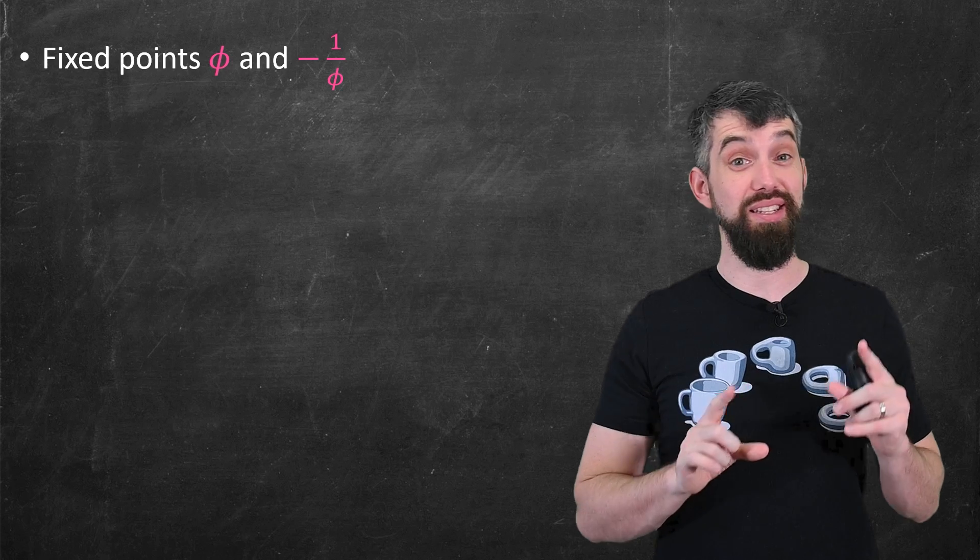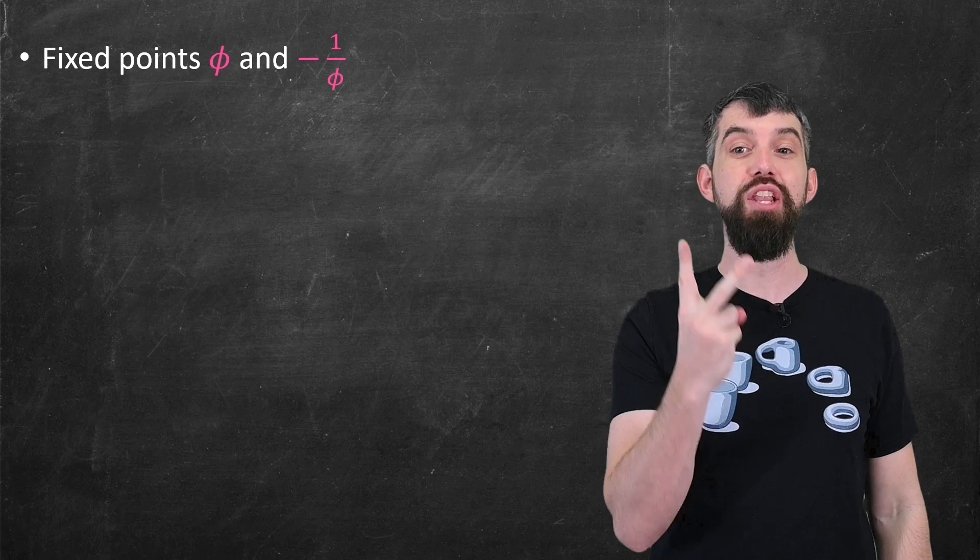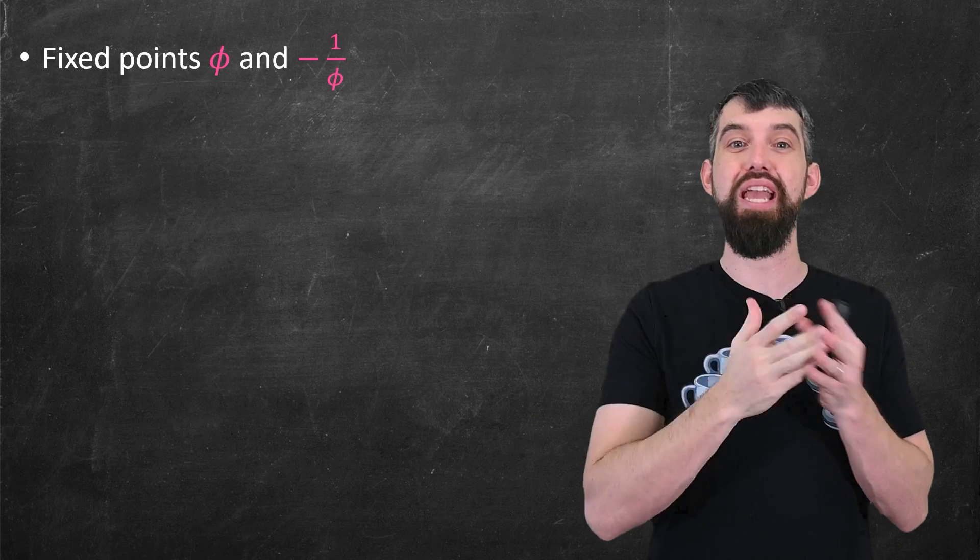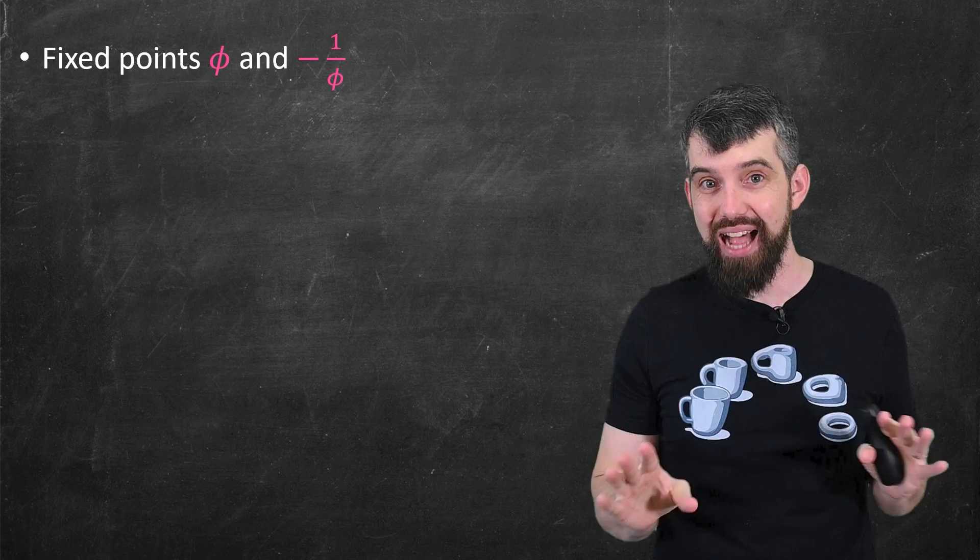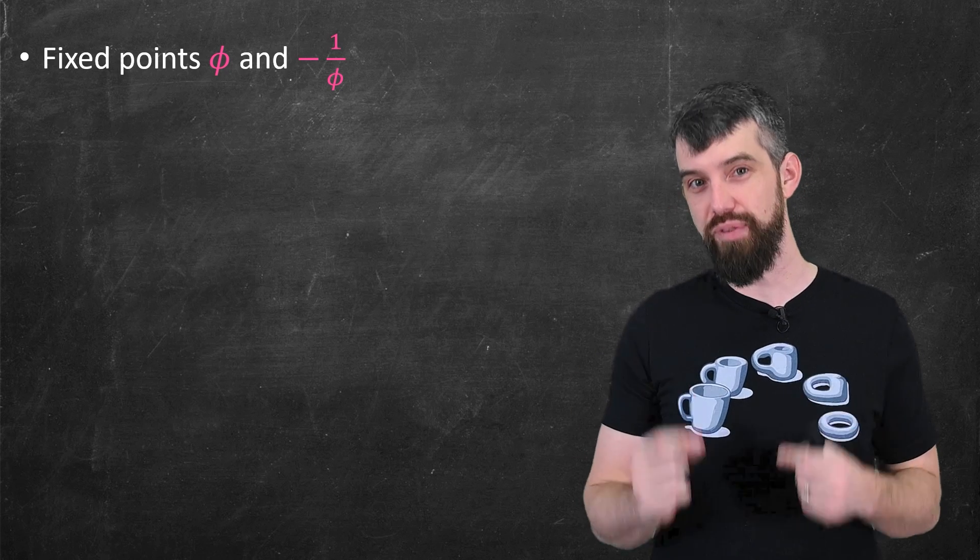Okay, so let's summarize the different things that we've observed. First of all, we have two points that are genuinely fixed, the golden ratio and negative 1 over the golden ratio. You apply f, you get exactly the same thing. And so for those initial values, our sequence is convergent.